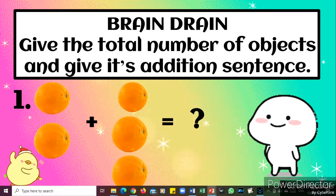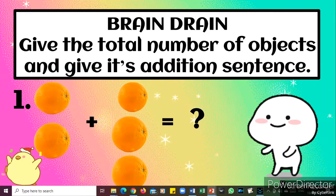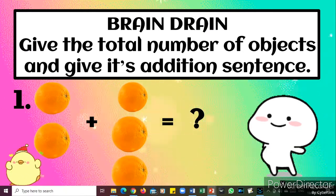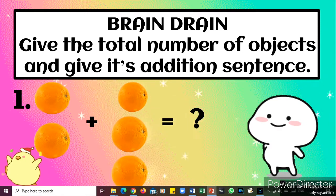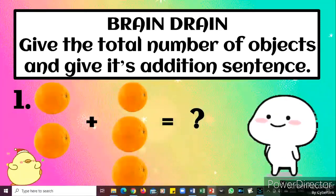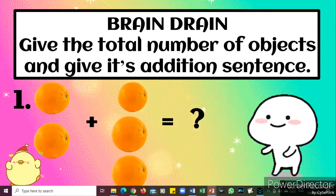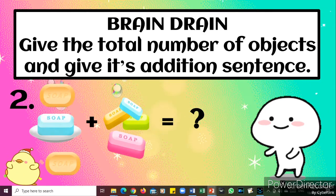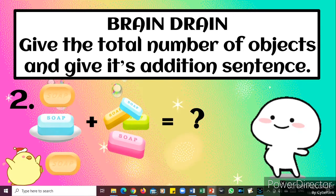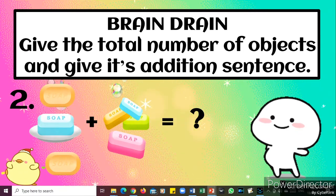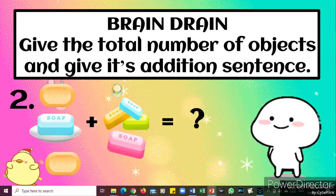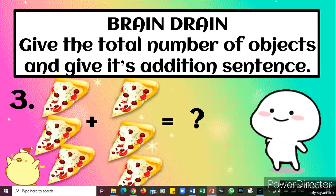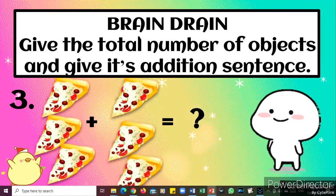Now let's have some brain drain activity. Give the total number of objects and give its addition sentence. We have two oranges plus three oranges is equals to — ? We have three soaps and four soaps is equals to — ? We have three pizzas plus three pizzas is equals to — ?